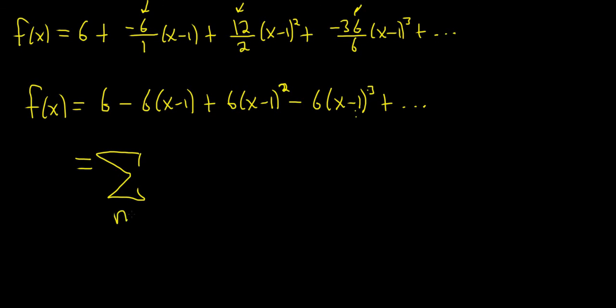So this is the infinite sum as n runs from 0 to infinity. We're going to have a 6, because all the terms have 6s. And positive, negative, positive, negative indicates that it's going to be something like negative 1 to the n. So let's check. If you plug in 0, you get 1, so it's positive. Plug in 1, you get negative 1 to the 1, so it's negative. Plug in 2, you get negative 1 squared, so it's positive. Plug in 3, you get negative 1 cubed, so it's negative. So the signs are okay.